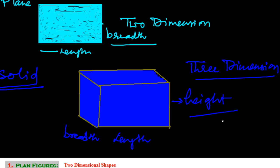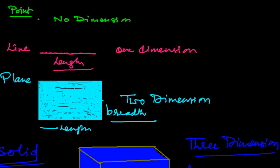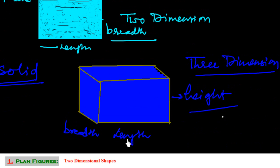So this is the difference between all the dimensions: a point has no dimension, a line has one dimension with only length, a plane figure is two-dimensional with length and breadth, and a solid is three-dimensional where length, breadth, and height are all present.